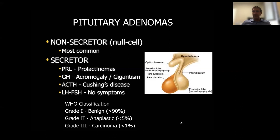When we talk about pituitary adenomas, we talk about the pituitary gland, its anatomy, its location, and structures around it. We'll talk a bit more about the cavernous sinus in a minute. Pituitary adenomas are, for the most part, benign tumors that come from the pituitary tissue itself.